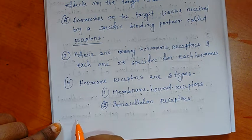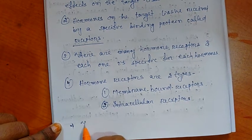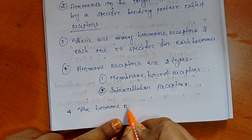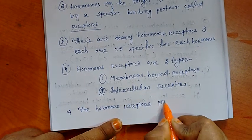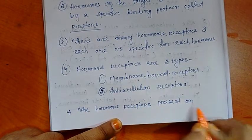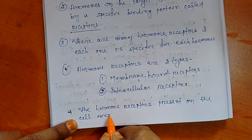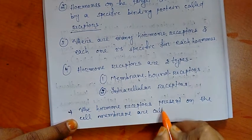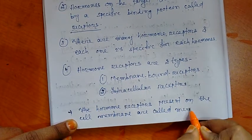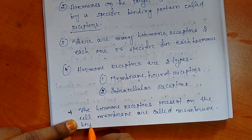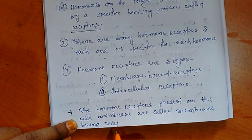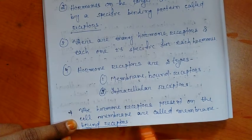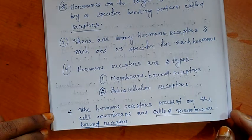Receptors present on the cell membrane of the target tissue are called membrane-bound receptors.